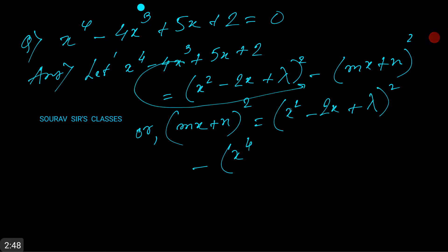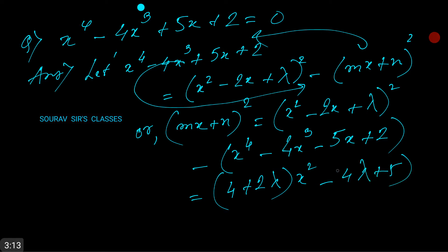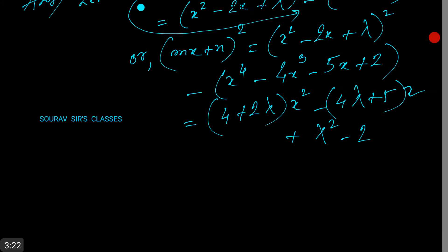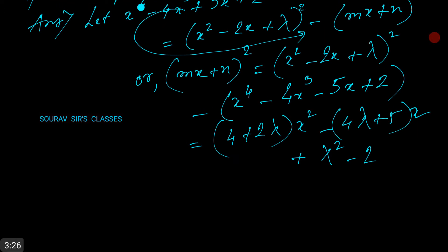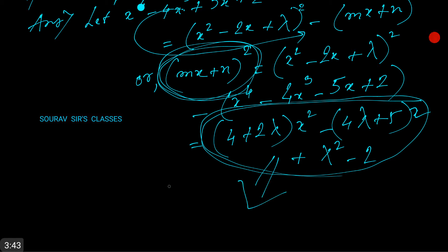Taking terms to the right-hand side and left-hand side, we have x⁴ - 4x³ + 5x + 2 equal to (4 + 2λ)x² + (-4λ + 5)x + (λ² - 2). Since we have taken this to the left-hand side, this entire expression must equal the other side.